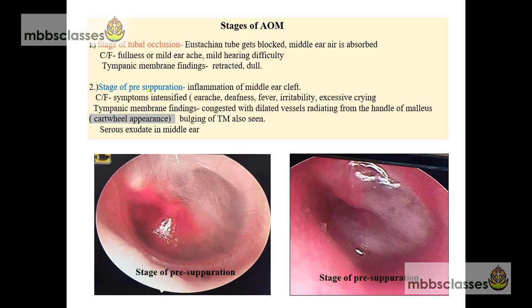Next is the stage of pre-suppuration, where inflammation of the middle ear cleft starts. Patients present with earache that increases in intensity. Hearing difficulty also intensifies. There will be fever, irritability, and excessive crying. On examination of the tympanic membrane, we will see congested dilated vessels radiating from the handle of the malleus, giving a cartwheel appearance. Sometimes in the stage of pre-suppuration, we may get serous exudate in the middle ear.